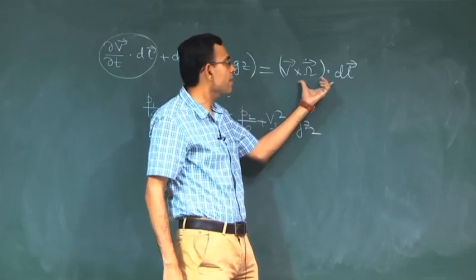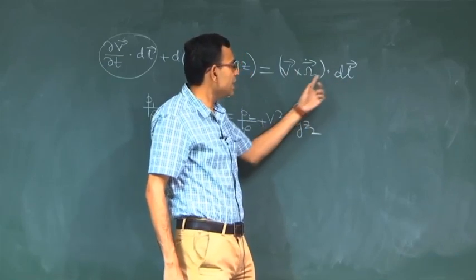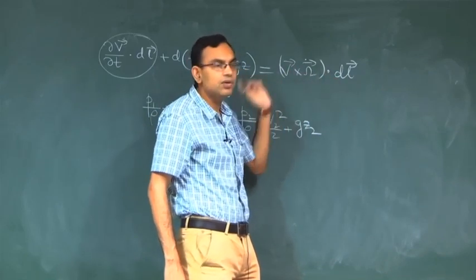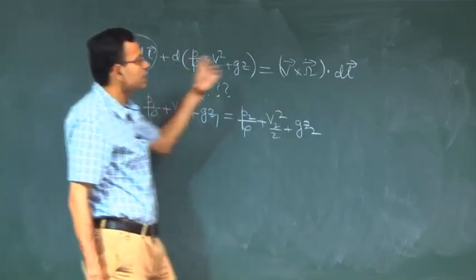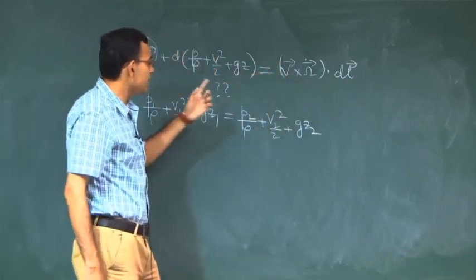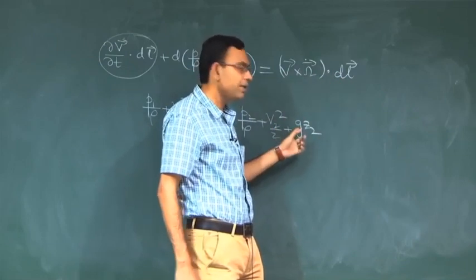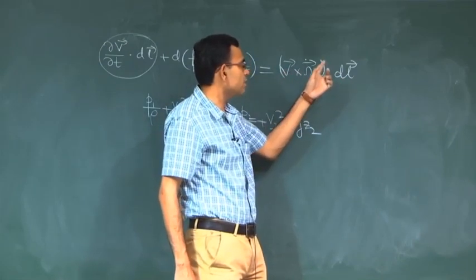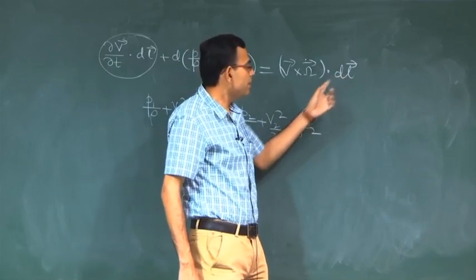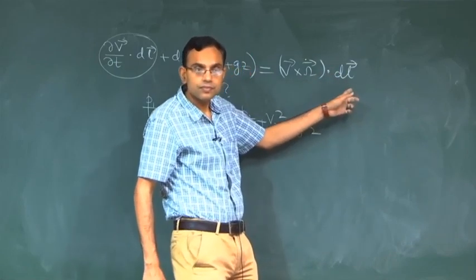We identified three realistic cases for the remaining term to be zero: one is that DL is along a streamline; the second is that vorticity is a null vector, that is irrotational flow; and third is that V cross omega is perpendicular to DL. When it is irrotational flow there is no restriction on DL, and therefore points 1 and 2 can be any two points. When it is not irrotational and DL is along a streamline, then 1 and 2 must be located on the same streamline.